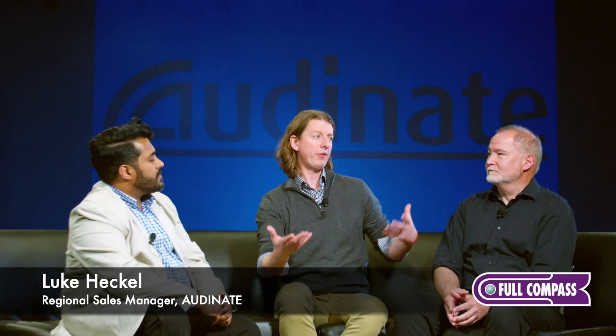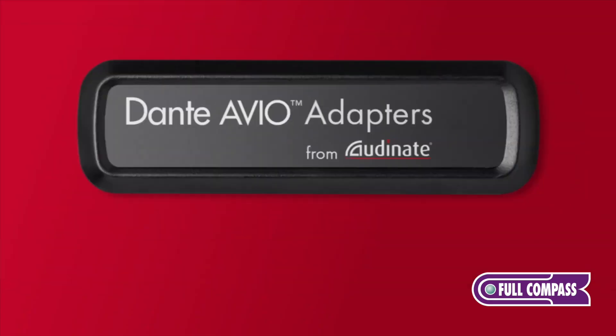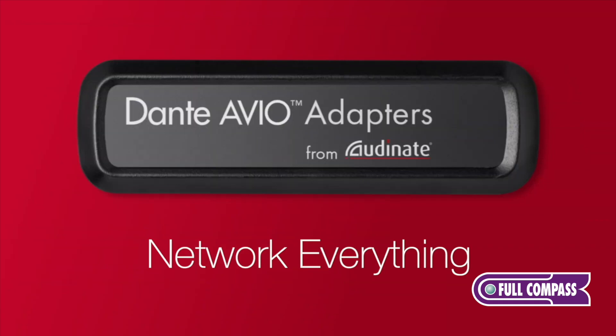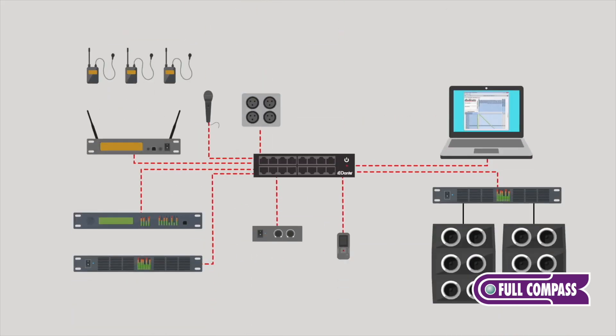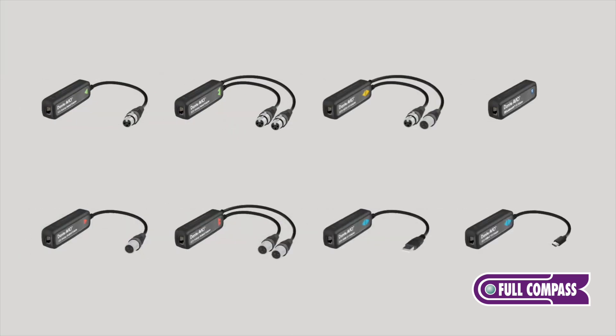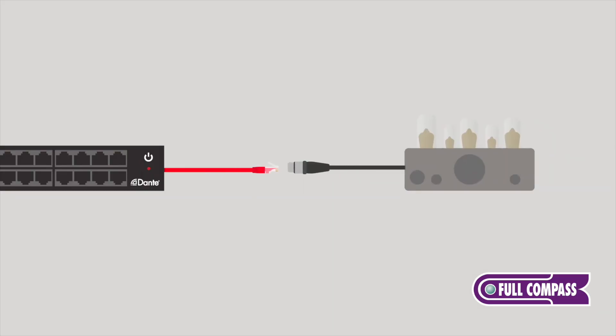On top of the plethora of Dante-enabled devices from the 400-plus manufacturers we work with, Audinate ourselves actually manufacture Avio devices — simple tools that allow you to get Dante audio off the network or land Dante audio on the network with existing non-Dante-enabled equipment. Avio adapters are Audinate's own iteration of entry-level solutions to get into a Dante network.